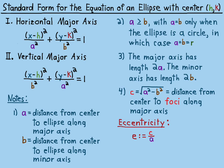The foci are always inside the ellipse, so c is always less than a, meaning eccentricity is always a number less than one. As the focus gets closer to the vertex, e approaches one. As the focus gets closer to the center, e approaches zero — and for a circle, the eccentricity is exactly zero.